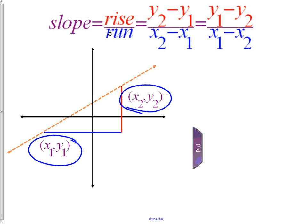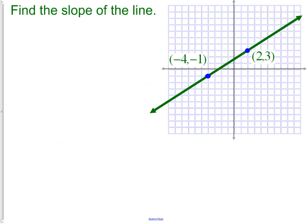You'll see how that works as we do our first example. The first thing I need to do is check which one is going to be my x1s, y1s, and which one is going to be my x2, y2. I'm going to choose 2, 3 to be my 1s, and my negative 4, 1 to be my 2s.